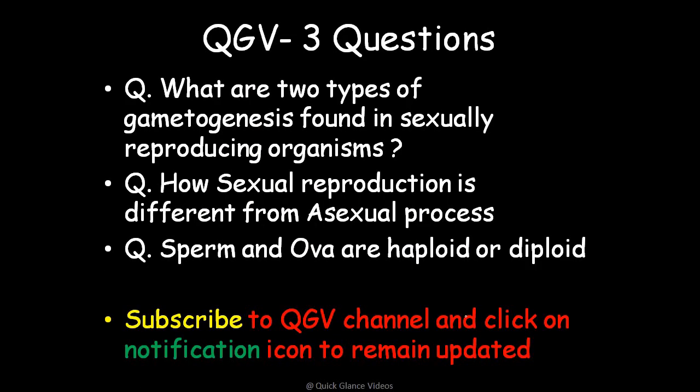Three review questions: What are the two types of gametogenesis found in sexually reproducing organisms? How is sexual reproduction different from asexual reproduction? Are sperm and ova haploid or diploid? You can answer in the comment section. Please subscribe to this channel and click the notification bell so you get notified about upcoming videos. Thank you.